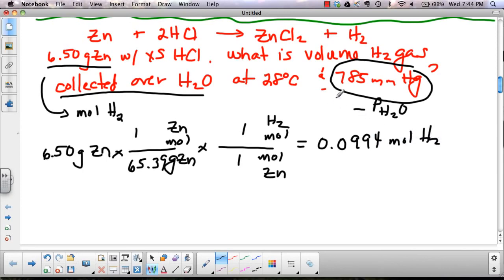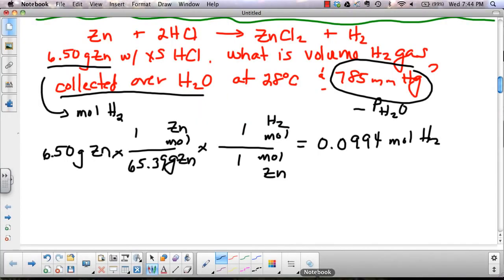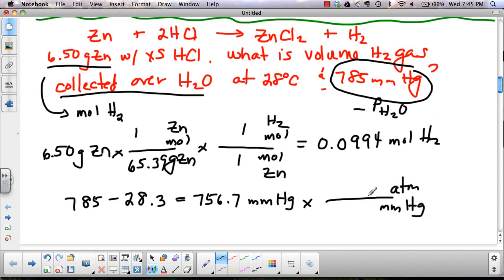And I want to know what volume this would be after I dried it. So we're at 28 degrees Celsius. We're going to go to our vapor pressures of water. We're going to find 28 degrees and we're going to see that it is 28.3 millimeters of mercury. So we're going to take our pressure and say 785 minus 28.3 and we'll get 756.7 millimeters of mercury. And then let's change that to ATM since that's what we need for PV=nRT. So 1 and 760. This gives us 0.996 ATM.